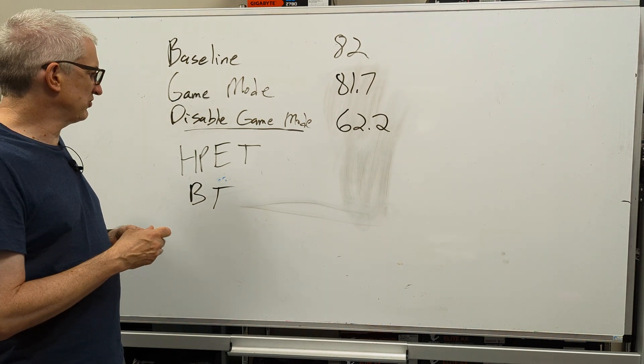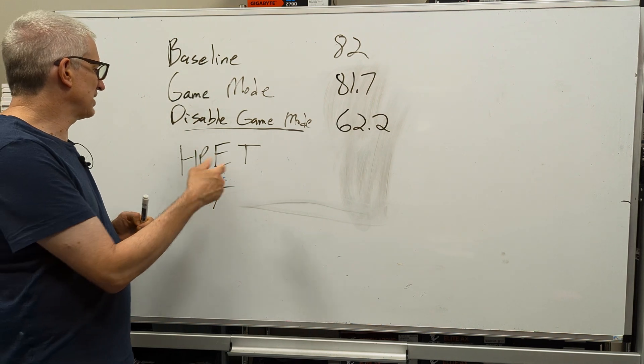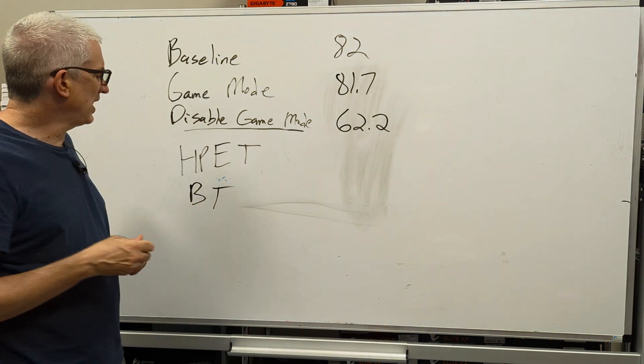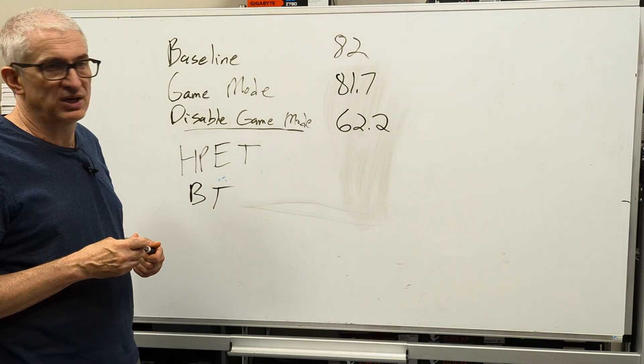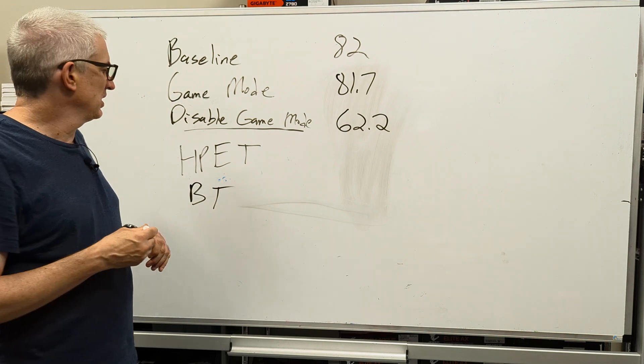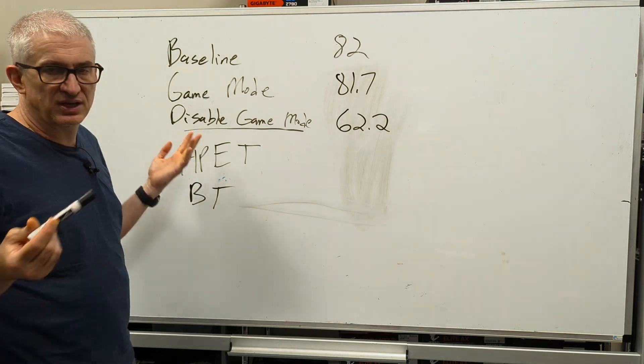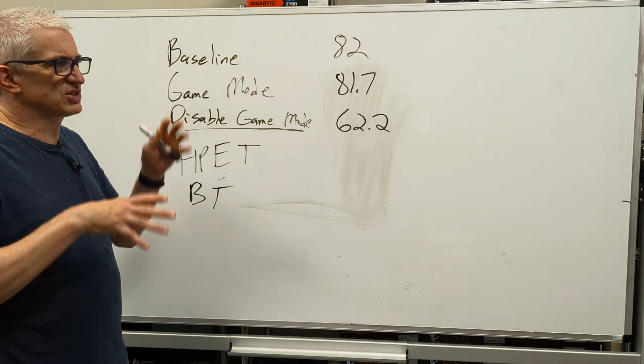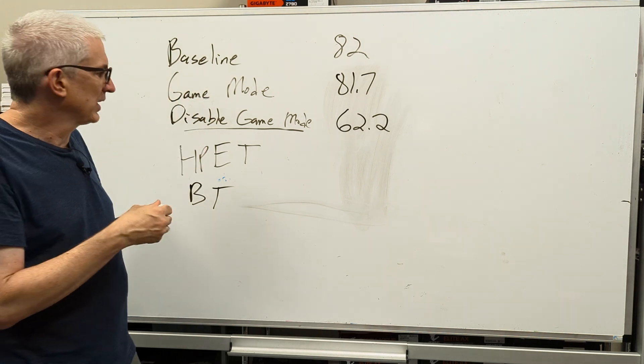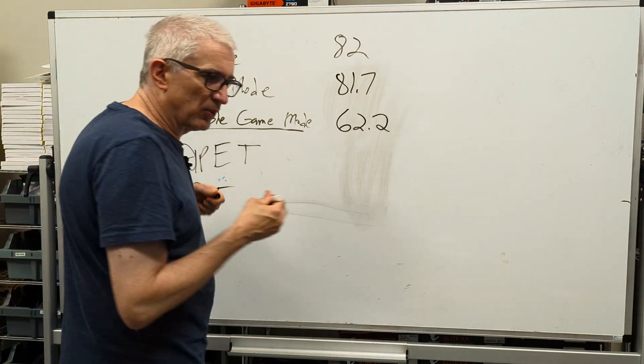Now the next thing he suggested, or it wasn't the next thing, but the next thing I did was to disable high performance event timer in the device manager. I don't suggest you do this, but this is a scheduling thing with Windows 11. And it has to do with scheduling tasks that are running. And so what did I get when I disabled that?